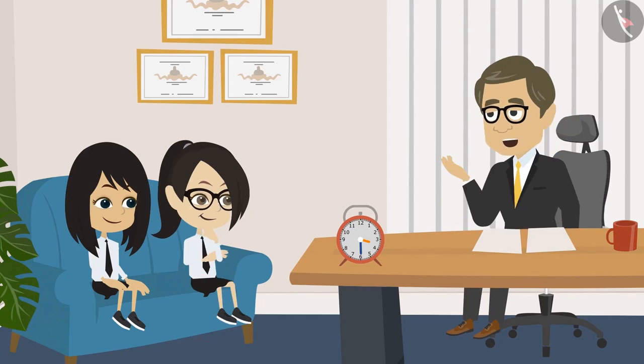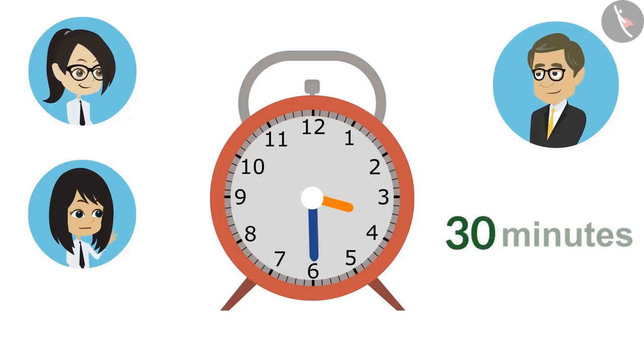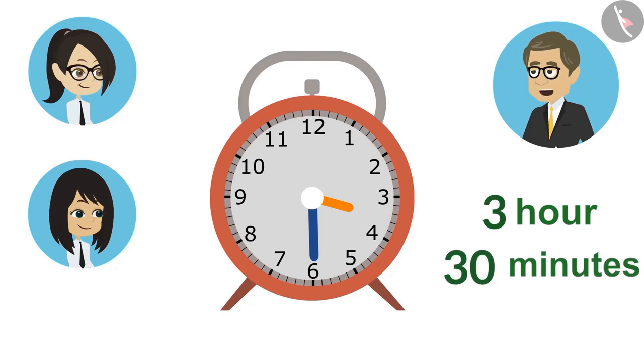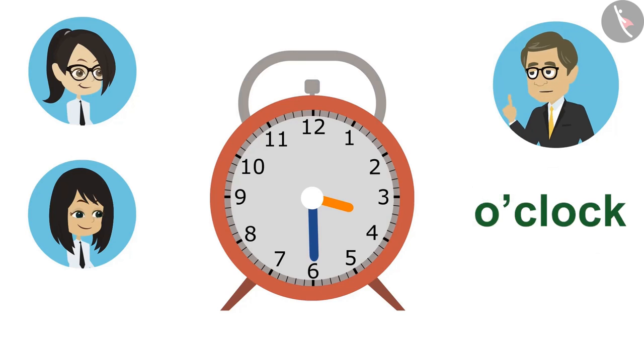Sir, it is 30 minutes. It means that it is already 3 o'clock, and it is 30 minutes more than 3 o'clock. If we read the time from this clock, we will say that it has been 30 minutes past 3.